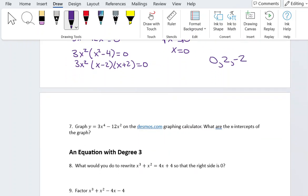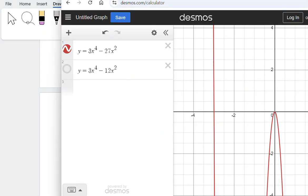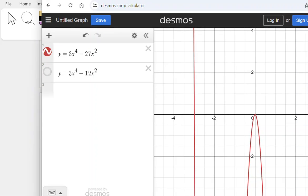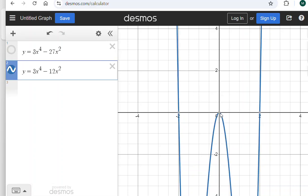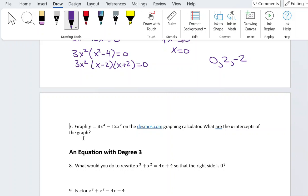And now I'm going to graph it on the Desmos graphing calculator again. So pull this over and turn my old graph off, and this is the new graph. So again, looking at where my x-intercepts are, they're at 0, 2, and negative 2, which matches what I got from solving.